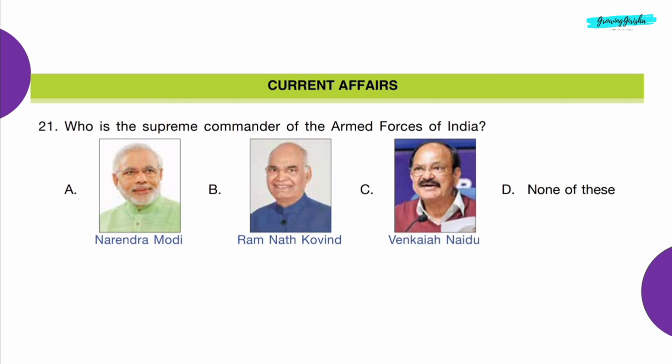Current Affairs. Question 21: Who is the supreme commander of the armed forces of India? It is always the president. So Option B — Ramnath Covind is the correct answer.